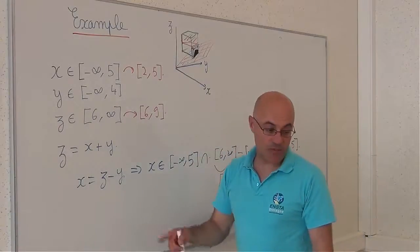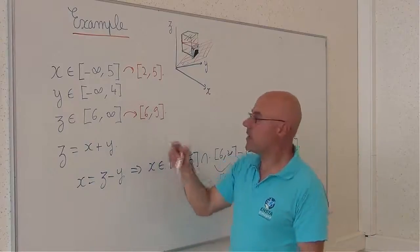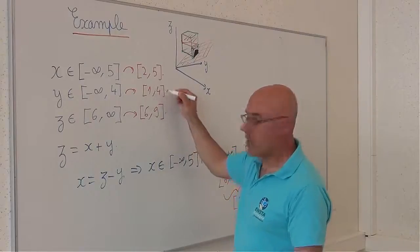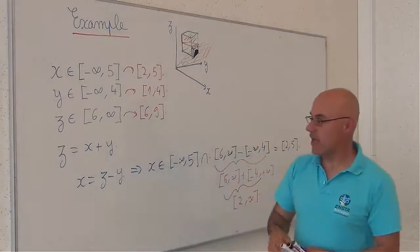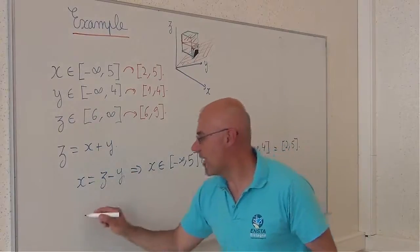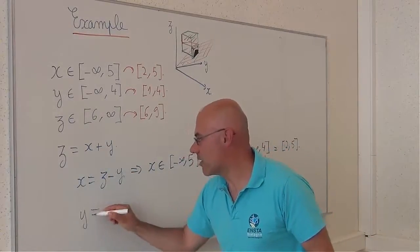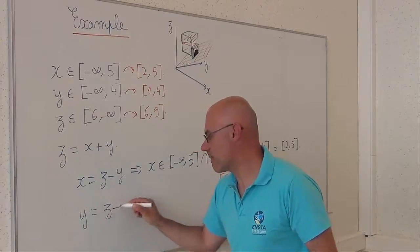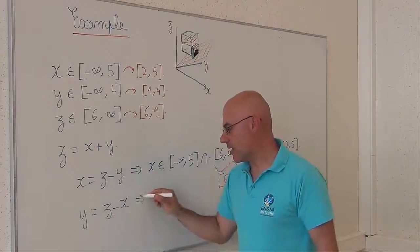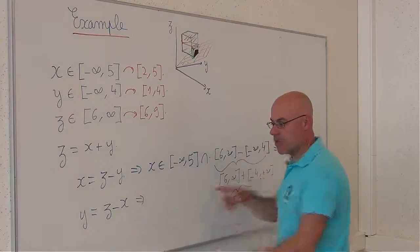I can do also the same for y. And I will obtain here 1, 4. And to do this, I just have to do a similar computation, except that I have to start with the equation y equal to z minus x and do a similar computation.